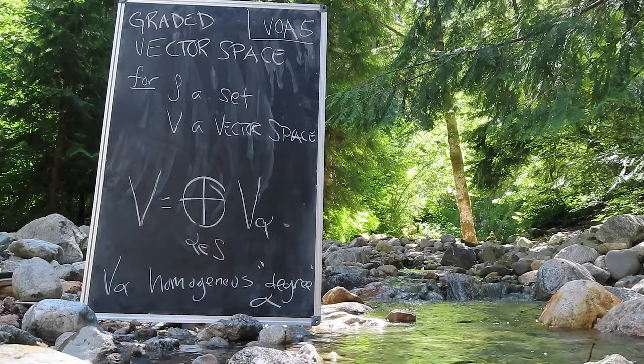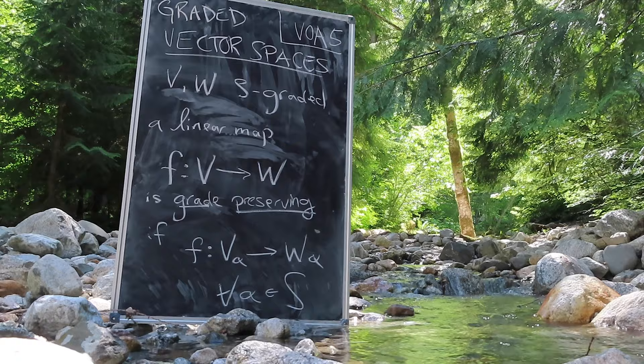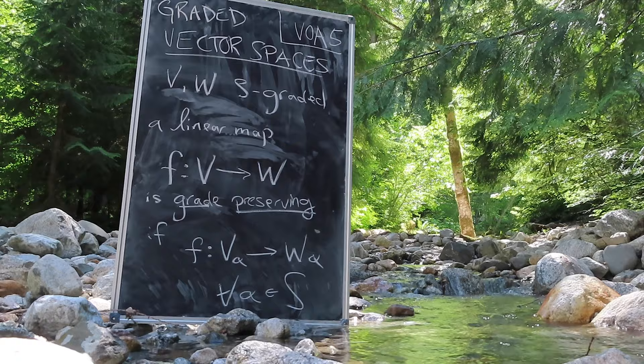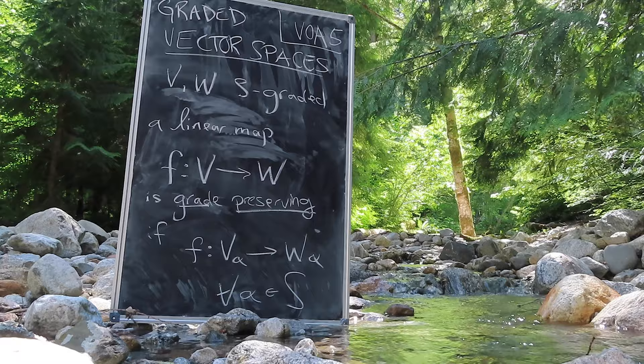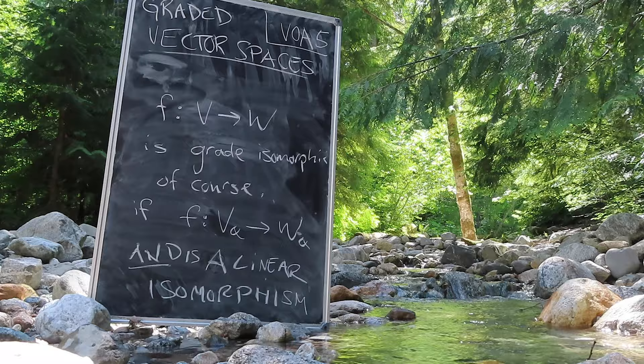V sub alpha is said to be homogeneous of degree alpha. Let V and W be S-graded vector spaces, and let F be a linear map between them. We say that F preserves the grading if F maps V sub alpha to W sub alpha, for all alpha in S. A grade-preserving map is a grade isomorphism if it is a grade-preserving map and a linear isomorphism, and so on.